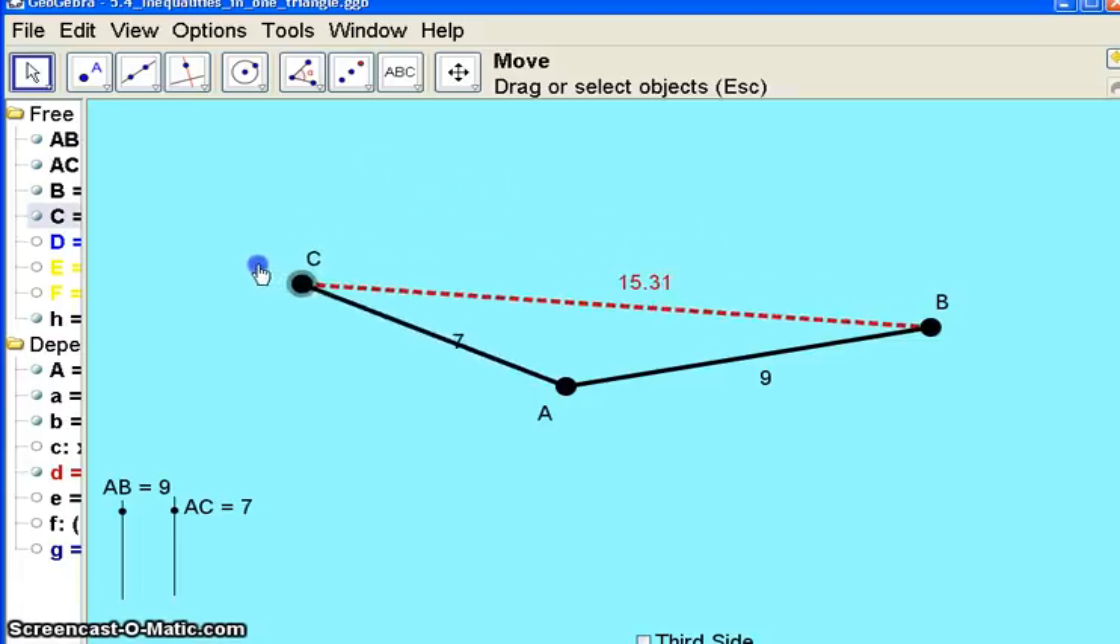But let's start playing with it. If we move C, do I still have a triangle if CB is at 2.49? I sure do. Do I have a triangle if C is way over here where BC is 13.27 units long? I sure do, it still looks like a triangle. So notice how AB hasn't changed, it stayed at 9. AC hasn't changed, it stayed at 7.